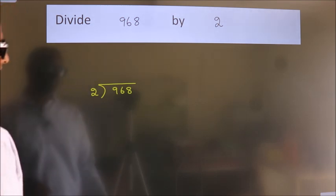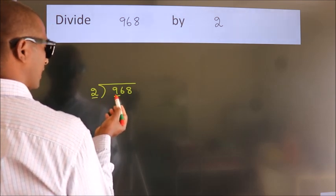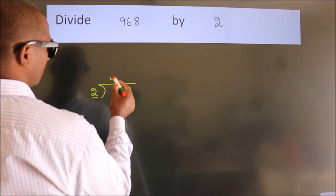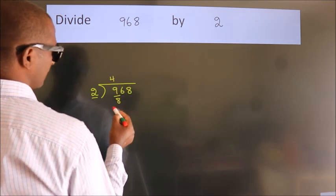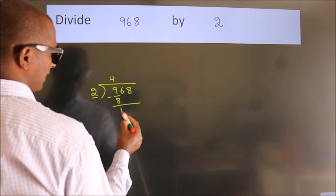Next, here we have 9, here 2. A number close to 9 in 2 table is 2 fours 8. Now we should subtract. We get 1.